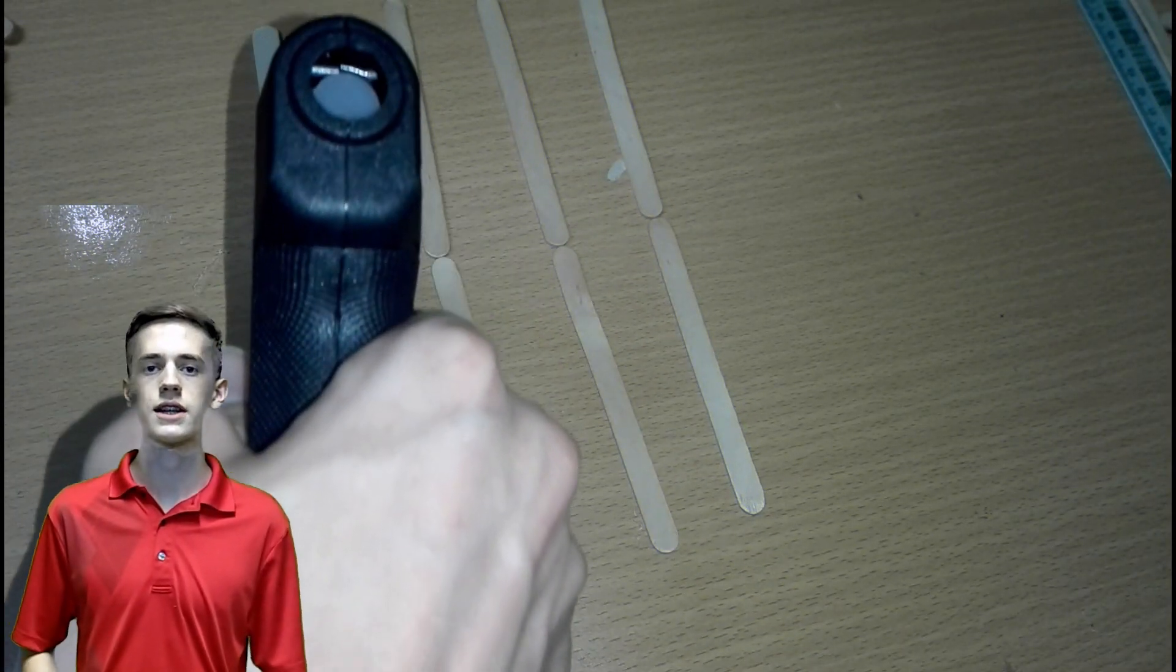To make this project you'll need 19 popsicle sticks, two chopsticks, two straws, six bottle caps, one and a half feet of fishing wire, and last but not least you'll also need a small weight of your choice. Let's get this started.